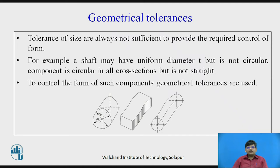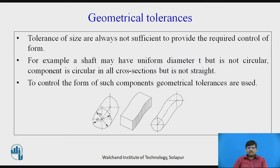For example, if you want to manufacture a shaft of 50 mm diameter, an allowance is provided to the manufacturer: a shaft of 49.5 mm is also allowed, or a shaft of 50.5 mm is also allowed. So a range of 49.5 to 50.5 is allowed. This is an example of dimensional tolerance, where only the size is toleranced.